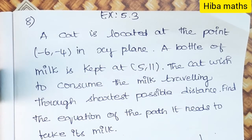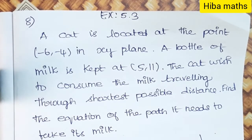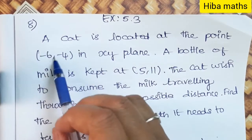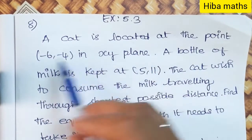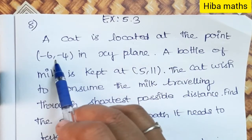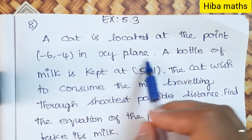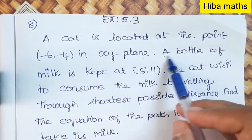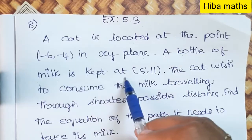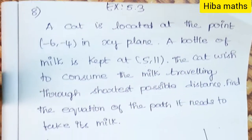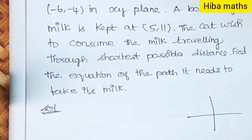Hello students, welcome to Hibamax. 10th standard Maths, Exercise 5.3, question 8. A cat is located at a point in the xy plane. A bottle of milk is kept at (5, 11) in the xy plane. We can use a graph.